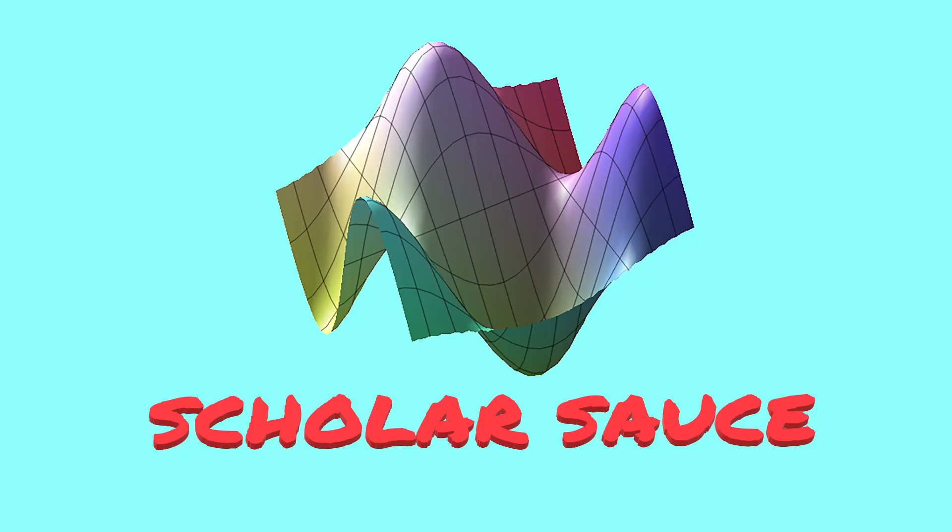And that's it for part five of every type of math. This part covered every type of statistics, but the first four parts of this series covered every type of calculus, algebra, geometry, and discrete mathematics, respectively. If you missed those videos, you can find all five in this playlist here. If you enjoyed this video, please give it a like, and subscribe to Scholar Sauce to catch all the amazing content from our channel, including videos like this one about math facts that sound fake, but are actually true. And we'll see you next time on Scholar Sauce.